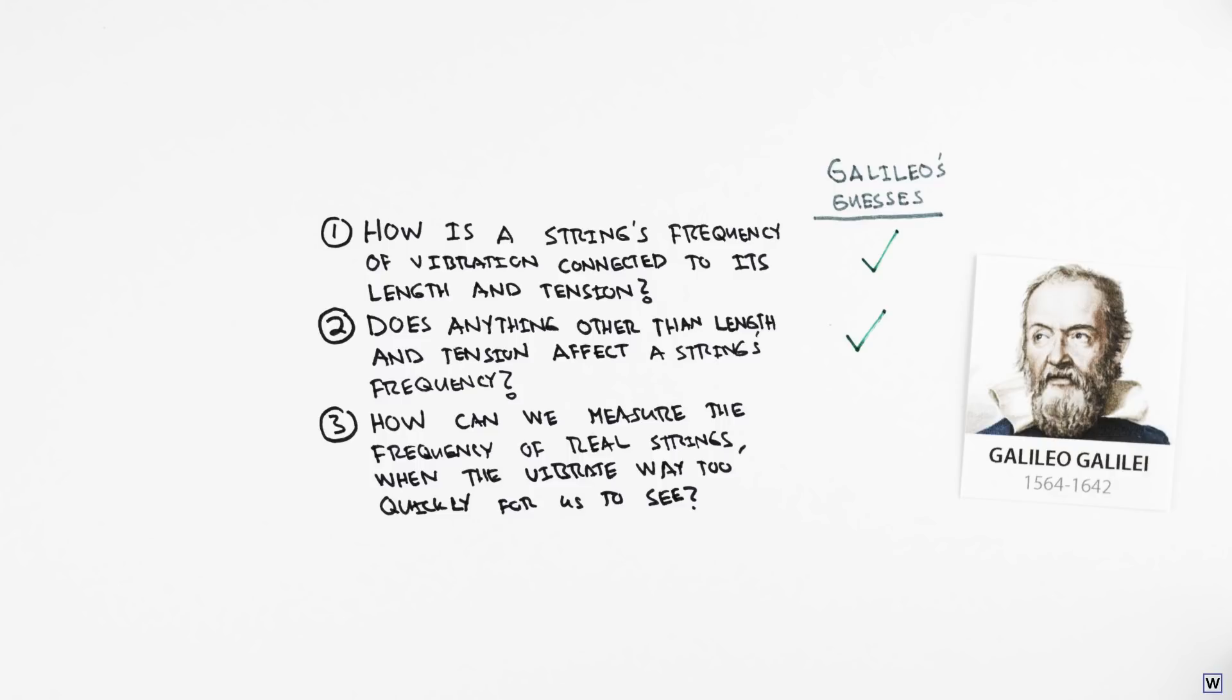However, Galileo also claimed that since strings vibrate too fast for us to see, actually measuring their frequency was impossible, meaning that he had no experimental means to test his guesses.